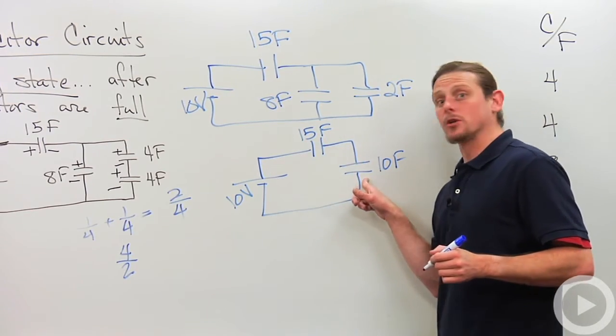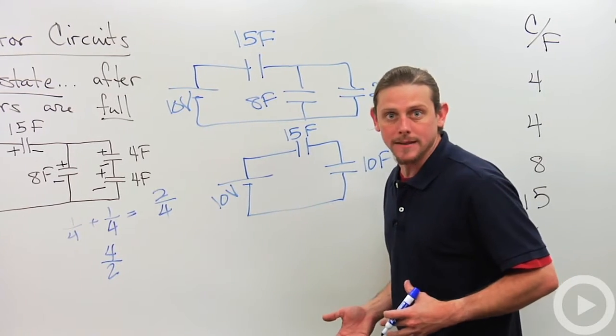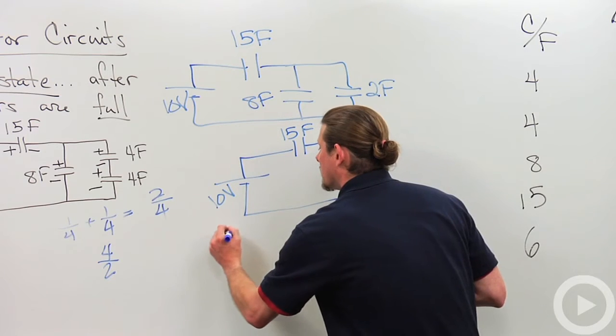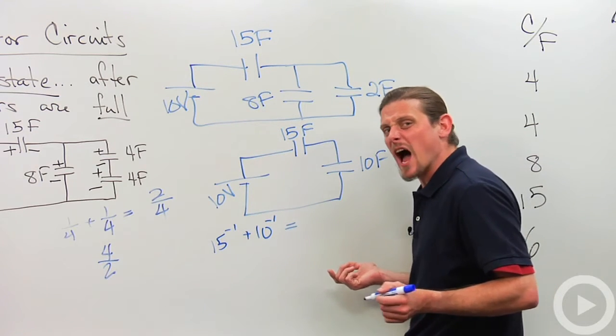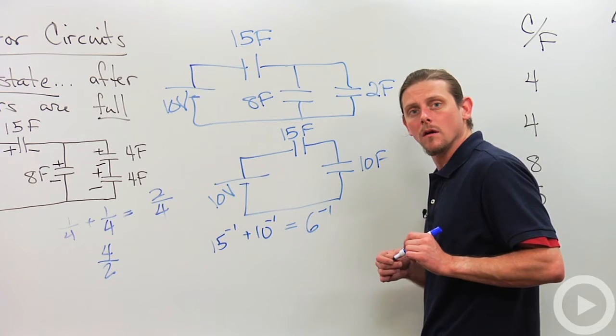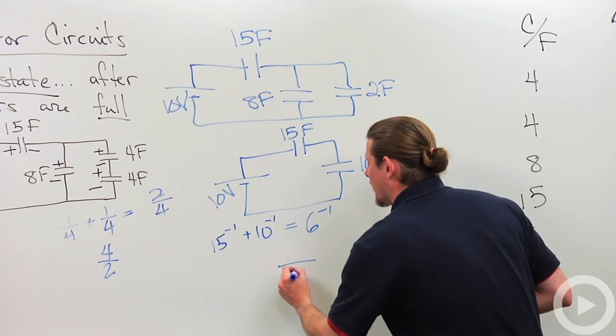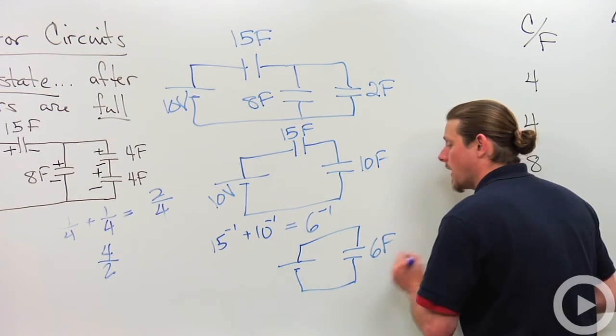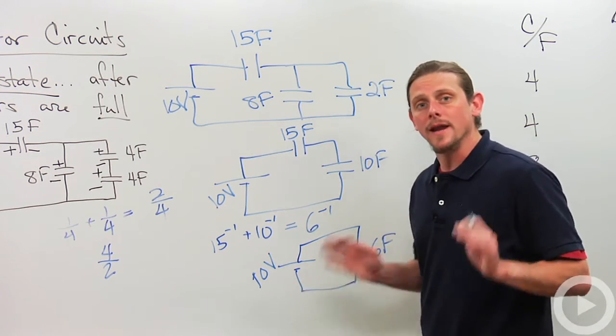Now these two guys are in series. So let's combine them in series. Again it's 1 over 15 plus 1 over 10. And it turns out that that ends up giving you 1 over 6. So that means that this circuit really is nothing more than this circuit. 6 farads, 10 volts.